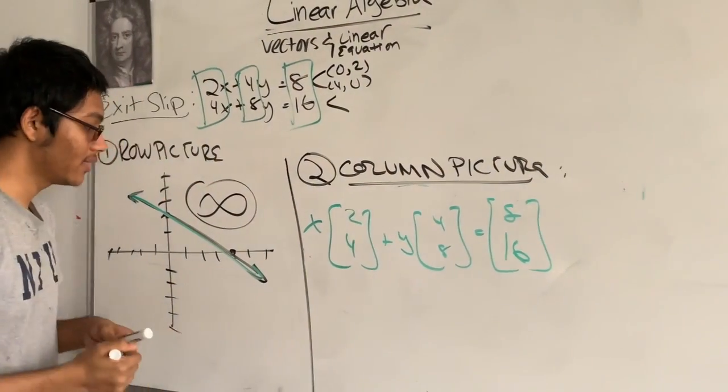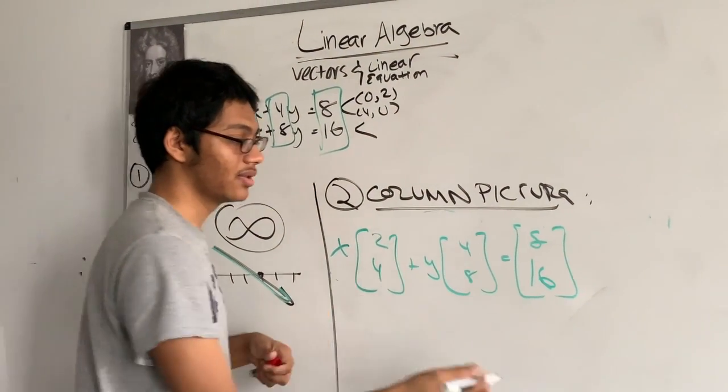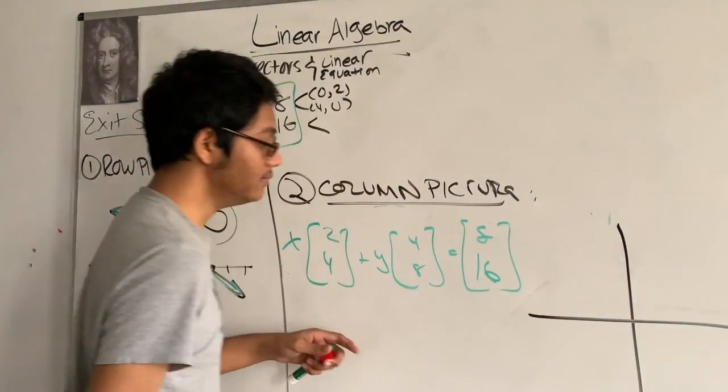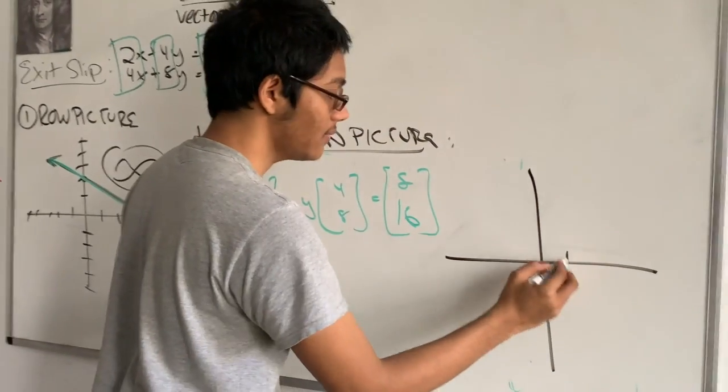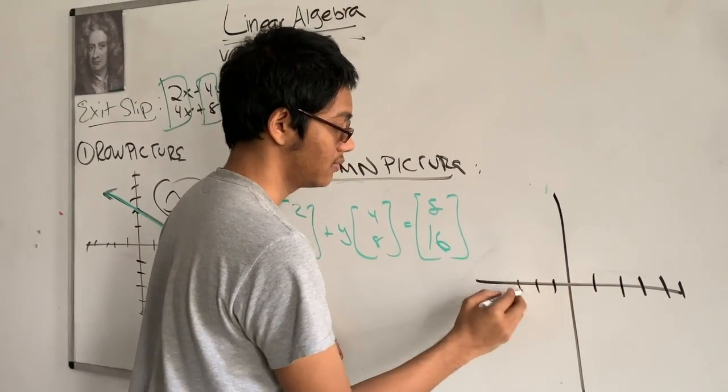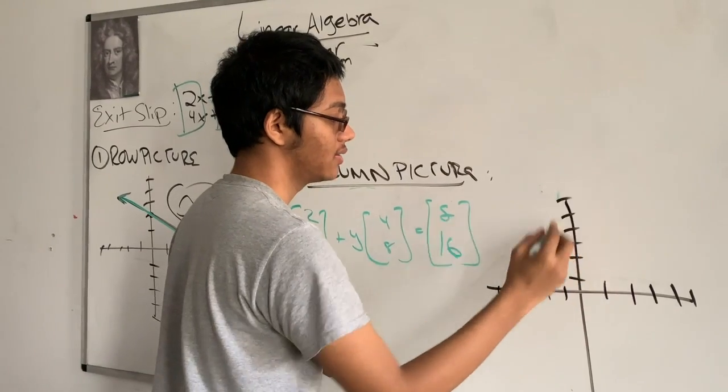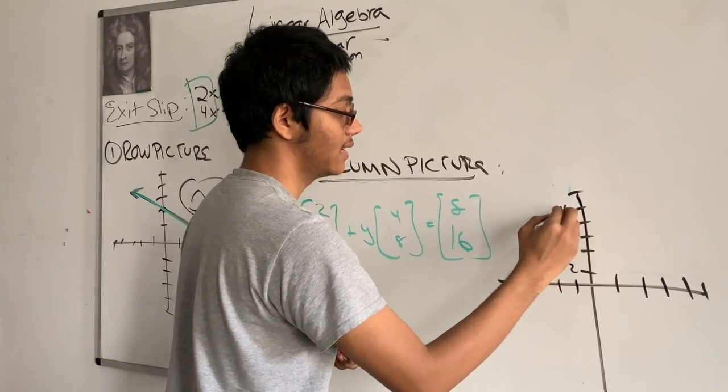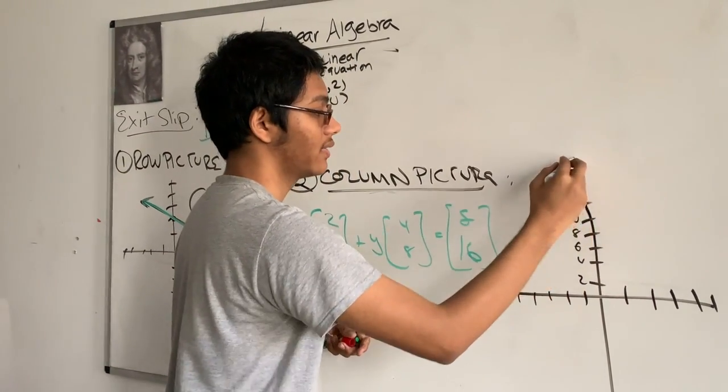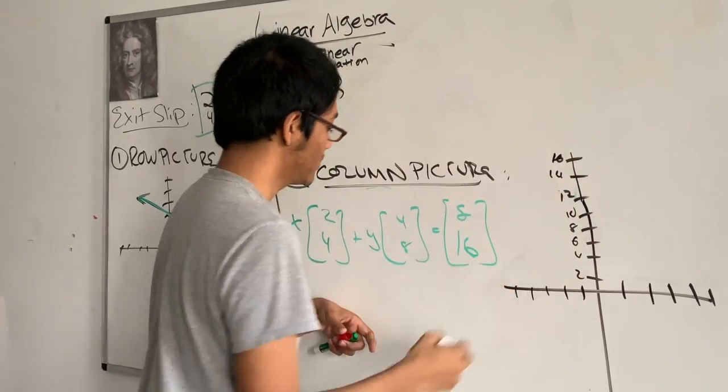So, if I graph out the vectors, how will this picture look like? And I'll scale this by 2, 2, 4, 6, 8, 10. I still don't have enough, 14, 16.